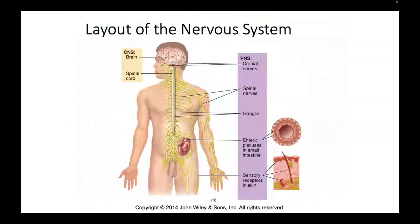Let's take a look at the layout of the neural system, and you'll hear me use the word 'neural' versus 'nervous.' I don't like to be nervous and I don't want my students to be nervous, so I'll typically use the word neural. The textbook refers to it as the nervous system, but I believe there's a lot of power to the words we use.